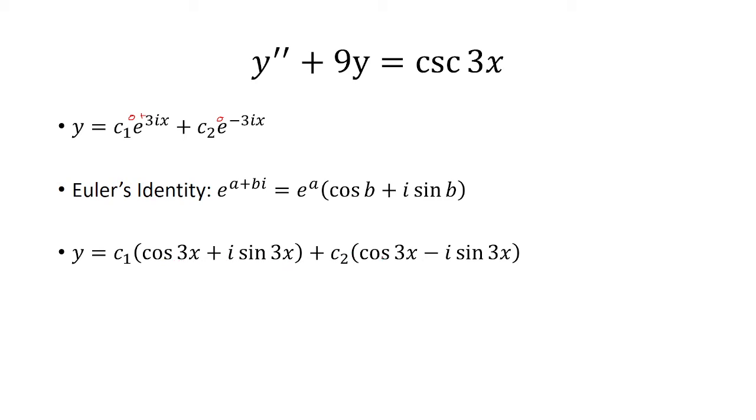And then for the second one we have c₂, cosine, we're technically going to plug in negative 3x, but cosine of negative x is just cosine of x.